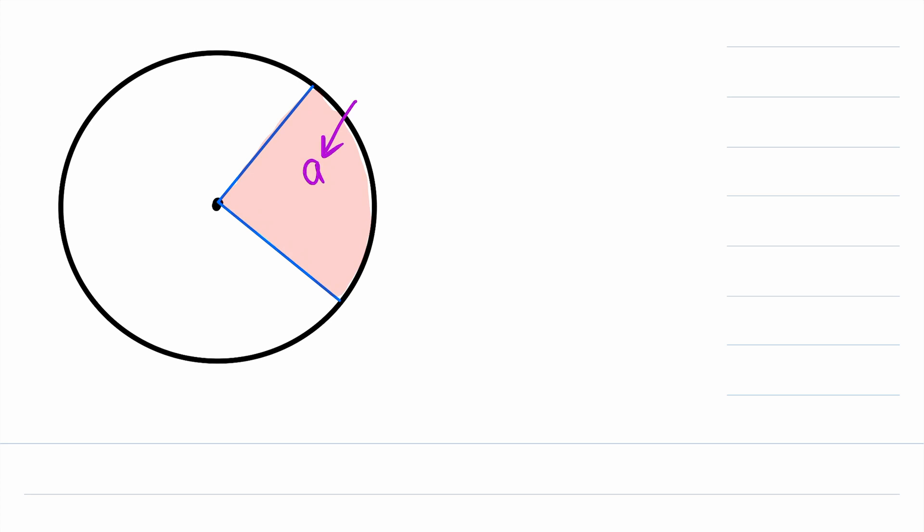We're trying to find A, the area of the sector, and we will say that the radius of the circle is R and this central angle has a measure of theta degrees. And then lastly we'll say that this arc length is equal to S.